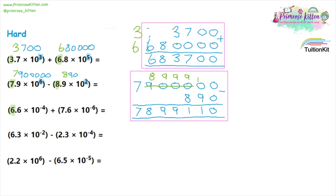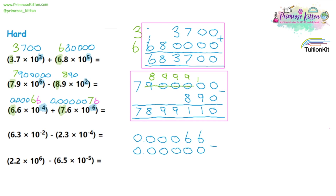Moving on to the next question. We have 6.6 times 10 to the minus 4, so we know this number is going to be below zero. Starting on the right hand side, we need four zeros in front of that 6, a decimal place after the first one, and we can't forget that second 6. So our answer is 0.00066. For 7.6 times 10 to the minus 6, again starting on the right hand side with our 7 — in front of it we need six zeros, putting a decimal point after the first one, and we can't forget that 6 after the 7. That needs to go after the 7 in the answer as well. We can then line those numbers up — remember, it's the decimal points that need to be in line — and then add those numbers together.